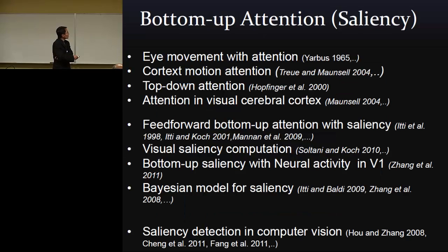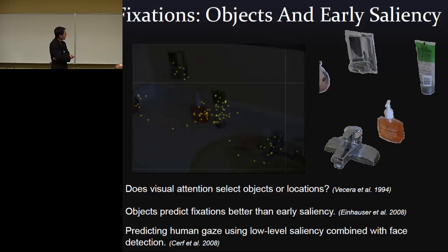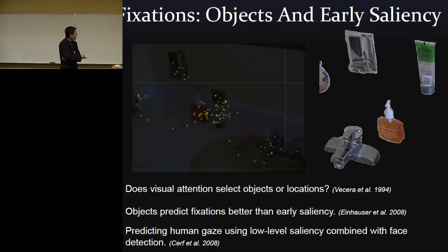In computational neuroscience, there are many bottom-up attention or saliency models studying how our eye movements guide attention — what are the saliencies. The yellow dots are called fixation points or attention points, and there are certain connections between these attention points and objects. Recent papers show how our visual attention is guided by objects, and objects can improve our fixation point prediction.